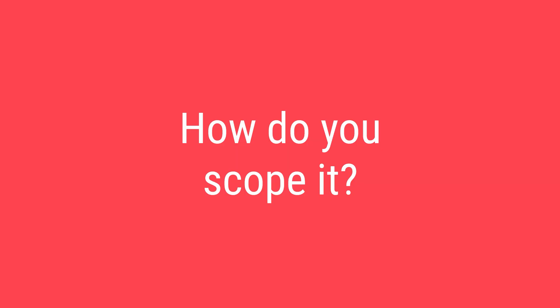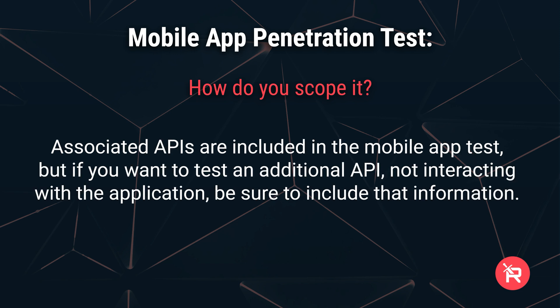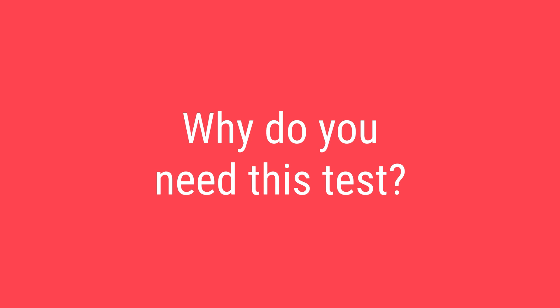How do you scope it? To get a quote for a mobile application pen test, please provide the number of application models or API endpoints to be tested. Associated APIs are included in the mobile app test, but if you want to test an additional API not interacting with the application, be sure to include that information.